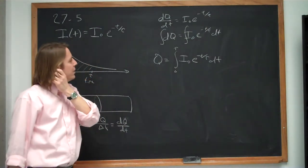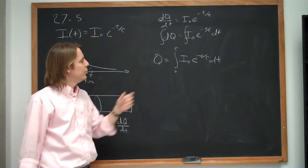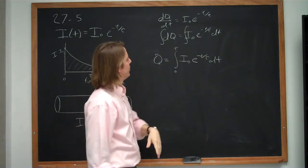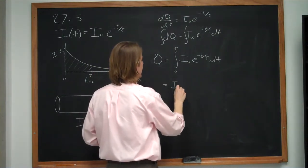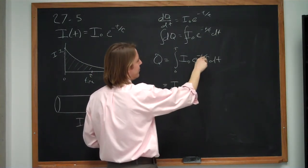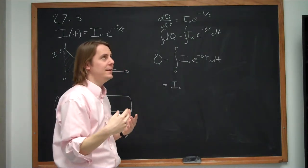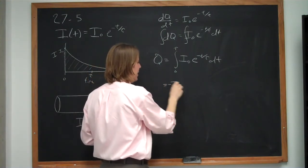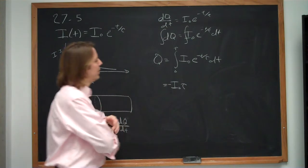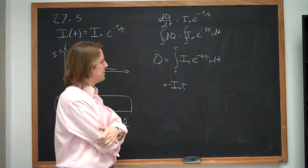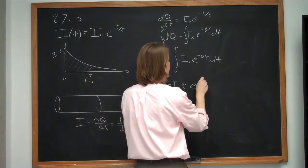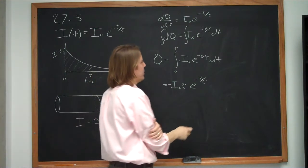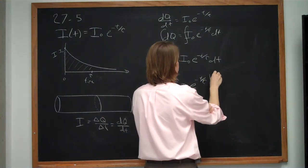The integral of an exponential isn't too bad. We divide by the derivative of the exponent with respect to time. The derivative of (-t/τ) with respect to t is -1/τ, so dividing by -1/τ gives a factor of -τ. The antiderivative is -I₀τ e^(-t/τ), evaluated from zero to τ.